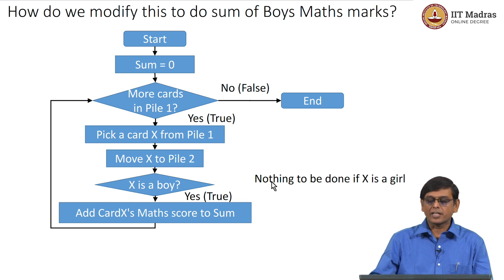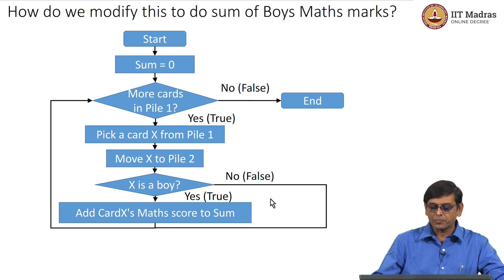How do we represent that nothing is to be done? Basically if there is nothing to be done then we are not adding the math score to sum. In some sense we have to skip this next step, and the easiest way to represent that nothing needs to be done is to bypass this box and go to the point after this. So the way to do that is to write on the no condition - that is when the condition turns out to be false, that is X is not a boy, meaning X is a girl - you just have an arrow.